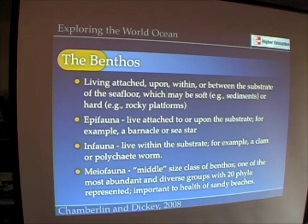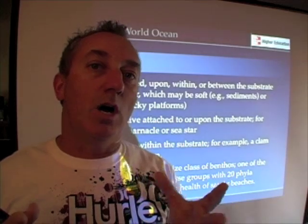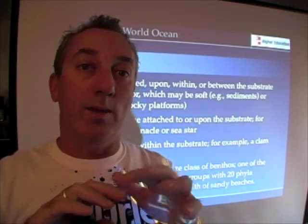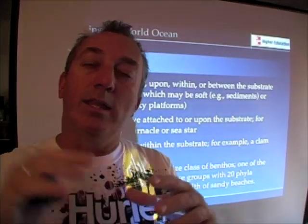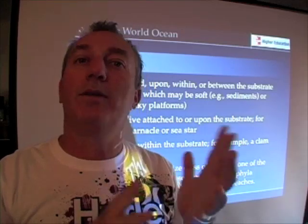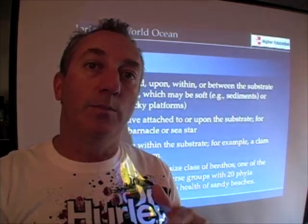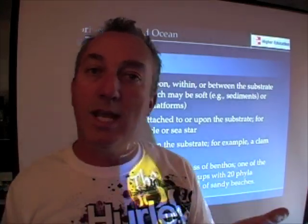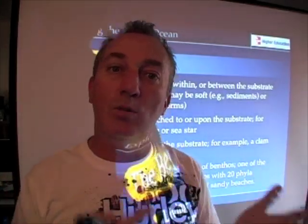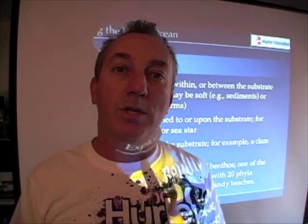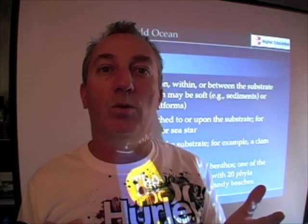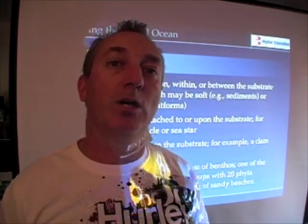The benthos are organisms that live on the seafloor. They may live permanently attached to the seafloor, like a barnacle, or glide along the seafloor like a sea star, or live underneath the seafloor like worms in the mud. Anything living in, upon, within, or between the substrates of the seafloor — whether muds, sands, silts, clays, sediments, or rocky shore — is considered benthos. Benthos can also include plants; seaweeds are benthic organisms because they attach to the seafloor.